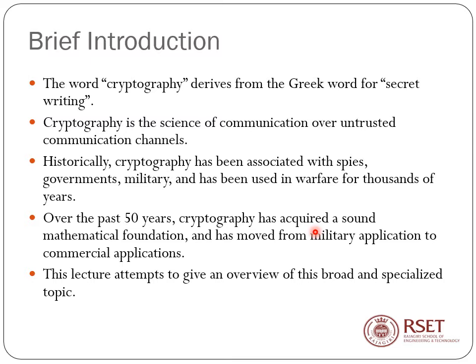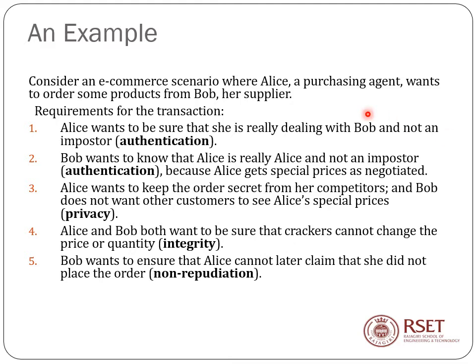This lecture attempts to give an overview of this broad and specialized topic. Consider an e-commerce scenario where Alice is a purchasing agent and Bob is her supplier. The requirements for any such transaction are: Alice wants to be sure she is really dealing with Bob and not an imposter; Bob wants to know that Alice is really Alice, not an imposter, because Alice gets special negotiated prices; Alice wants to keep the order secret from her competitors; Bob does not want other customers to see Alice's special prices; and both Alice and Bob want to be sure that hackers or third parties cannot change the price or quantity.